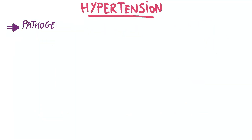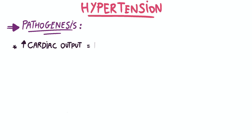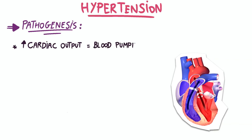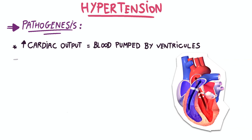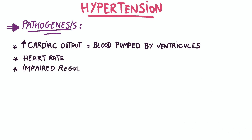The pathogenesis of hypertension involves multiple factors, including increased cardiac output, which is the amount of blood pumped by the ventricles, and the heart rate. Impaired regulation of the sodium eliminated by the kidneys is also a factor that can contribute to hypertension.